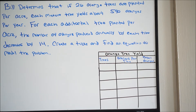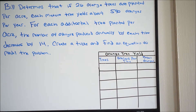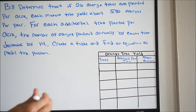I already created a blank table for us. From this table we're going to have to create an equation just like our last problem, but again this problem is going to be a little more in depth. So let's start filling in this table. We have trees, oranges per tree, and total oranges. So we know that if he plants 26 orange trees...